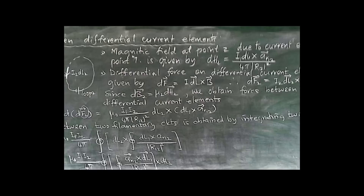The magnetic field at point z due to current element of loop one is given by dH2, which equals i1 dl1 cross a_r12 — where a_r12 represents the unit vector in that direction — divided by 4π into magnitude of r12 squared. This is similar to Coulomb's law derivation where the denominator contains the square of the magnitude r12.